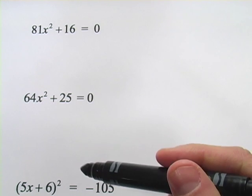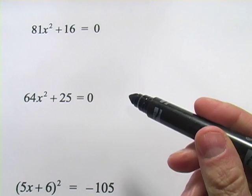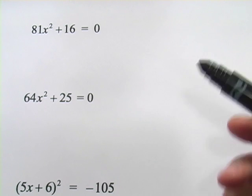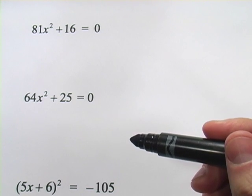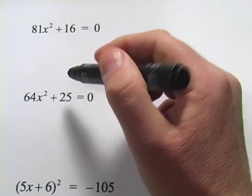In these problems, we're using the square root rule to solve some quadratics, but we're going to end up with some complex numbers, so we'll be dealing with that imaginary number i. Let's see how this works.